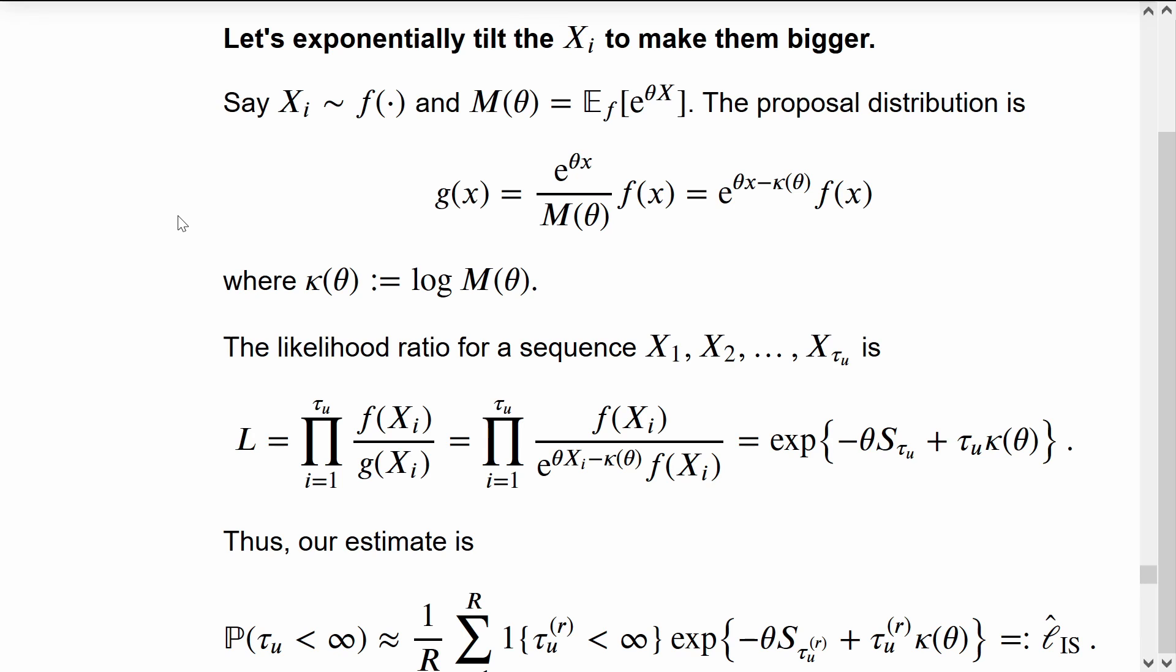If we simulate according to G, all of the X's until we hit ruin, then the likelihood ratio is the product of each of the X's individual likelihood ratios.